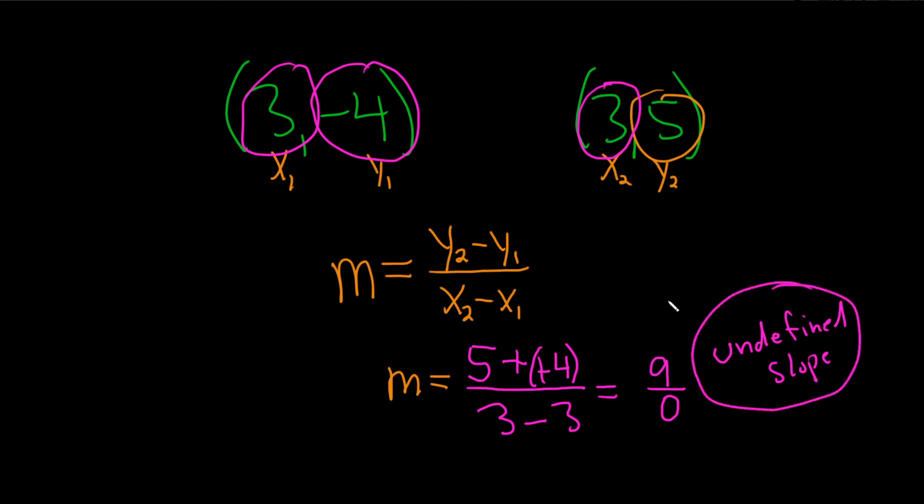So there is no slope. The slope is not defined, it's undefined. And whenever you have an undefined slope, you get what's called a vertical line. So the line is vertical.